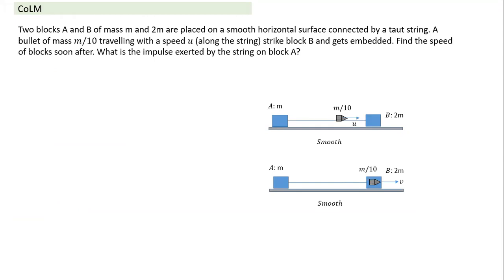Find the speed of the block soon after embedding. Think about what happens when the bullet strikes block B: there is a large normal force acting between the bullet and block B. The change in velocity happens in a very short time interval. The normal reaction exerted by the bullet on block B acts in the forward direction, and the bullet experiences a reaction in the backward direction. The impulse exerted by the normal reaction over that brief period accelerates block B.